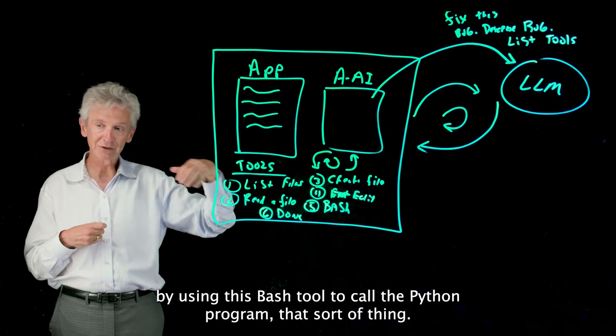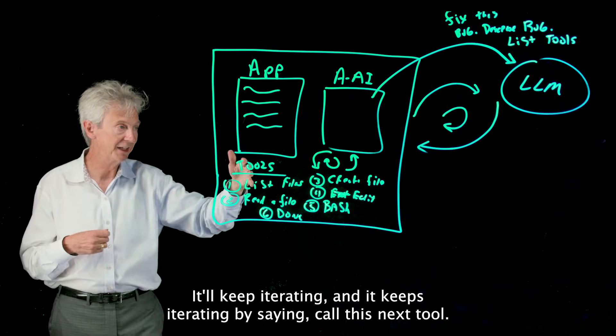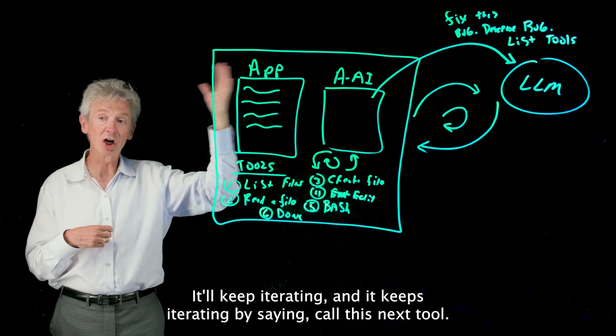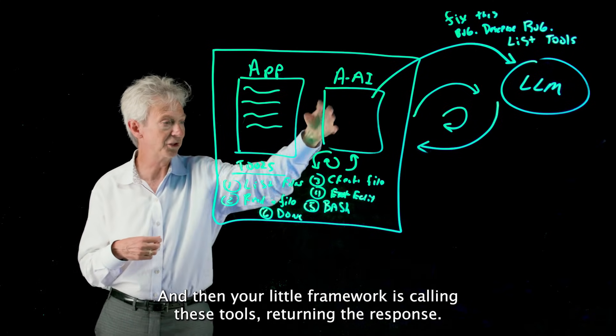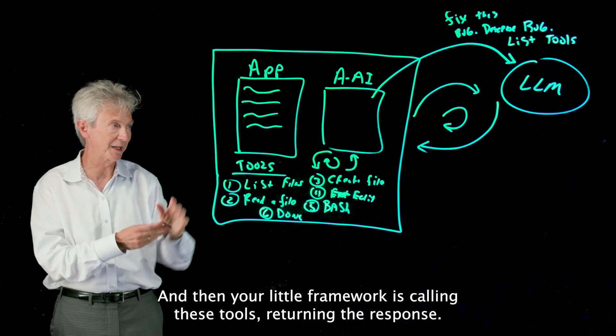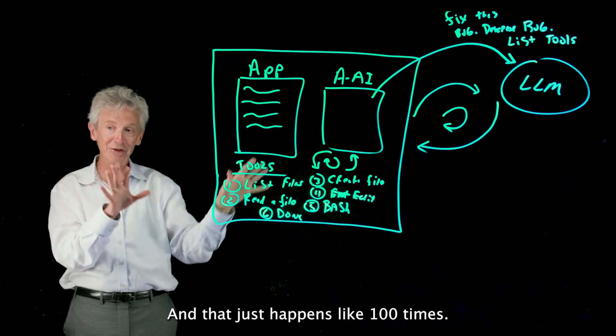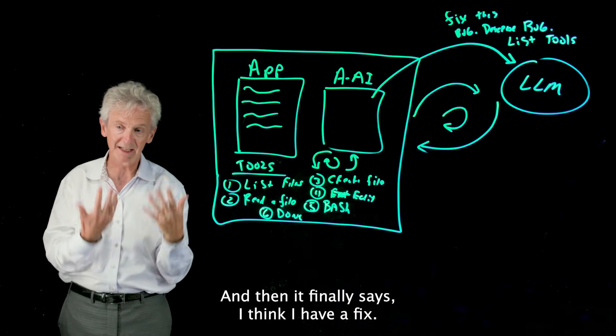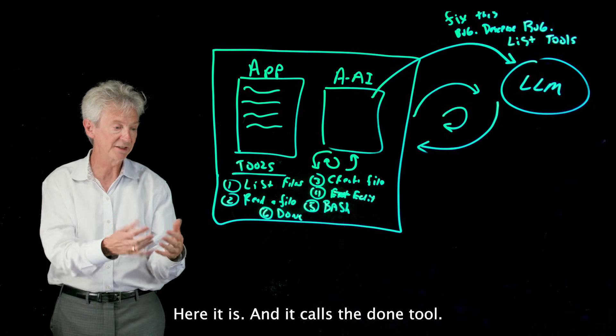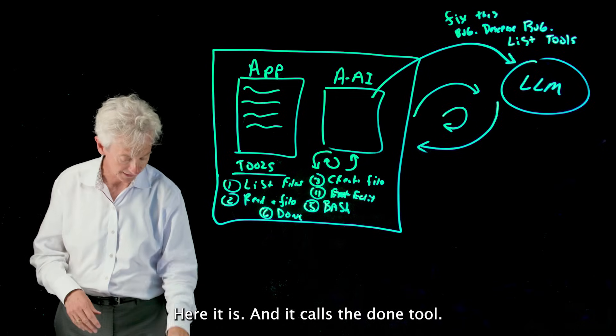And it keeps iterating by saying call this next tool, and then your little framework is calling these tools, returning the response, and that just happens like a hundred times. And then it finally says, 'I think I have a fix, here it is,' and it calls the done tool. And then once that's done, you go back to your app and deliver that patch.